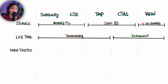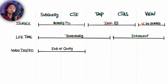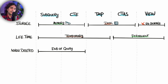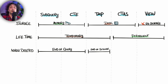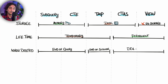Regarding when the database drops or deletes those objects: subqueries and CTEs live only during the execution of the query — once the query ends the database deletes everything from cache. Temporary tables live a little bit longer, as long as you are in the session, but once the session ends they are dropped. For CTAS and views, they are persistent and the database will only delete them if you explicitly use the DDL command DROP.